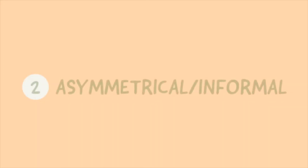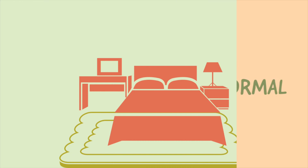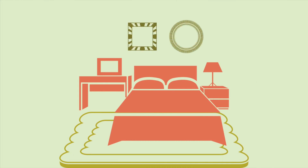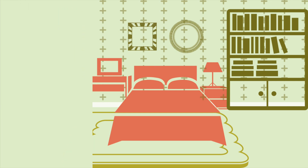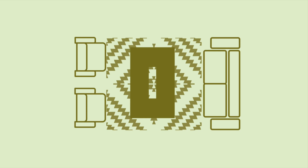Number 2: Asymmetrical or Informal. The visual weights of lines, colors, forms, and textures are balanced without exact duplication. It is not as ordered as symmetrical balance and can be more complex and interesting. For instance, a sofa can be balanced by placing two chairs on the other side.